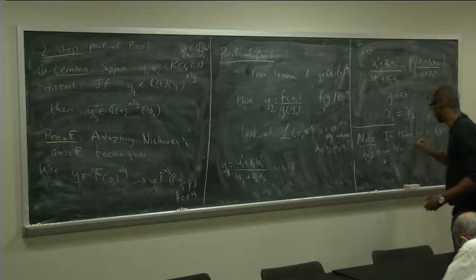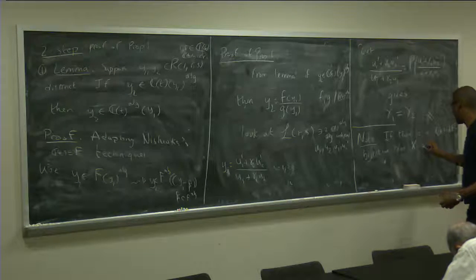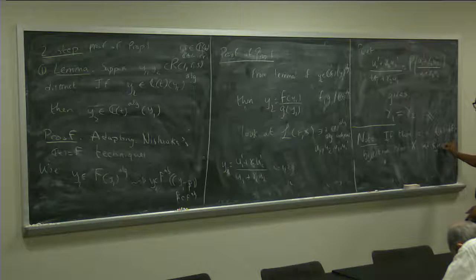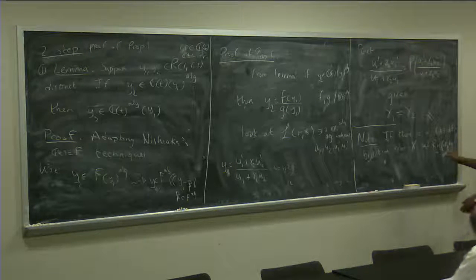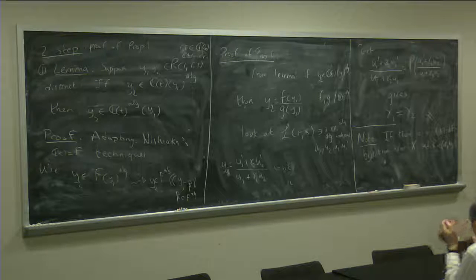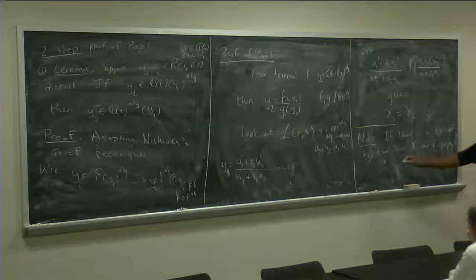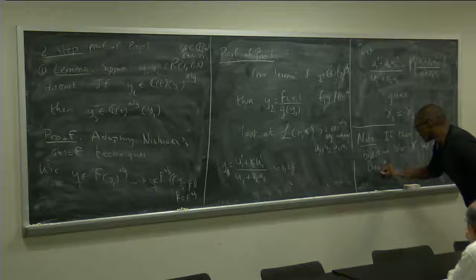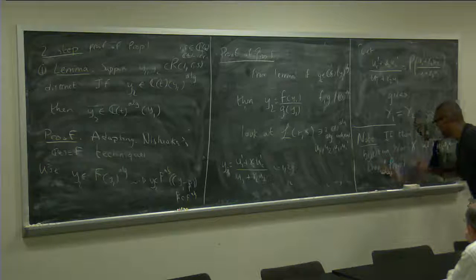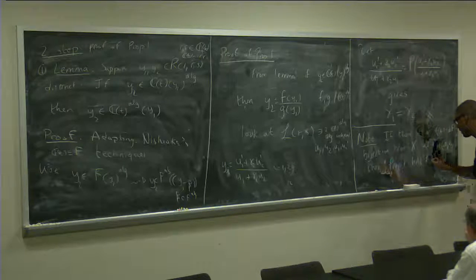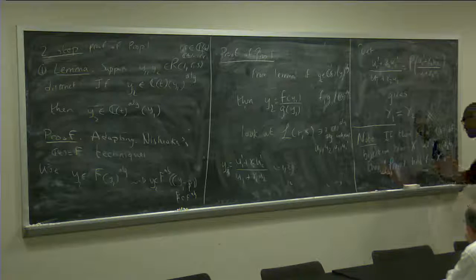note that if there's a you find a CT definable bijection between a set X and Ric A, B, C, where A, B, C, CT are CT irreducible and so on and so forth, then proposition 1 holds for X as well.